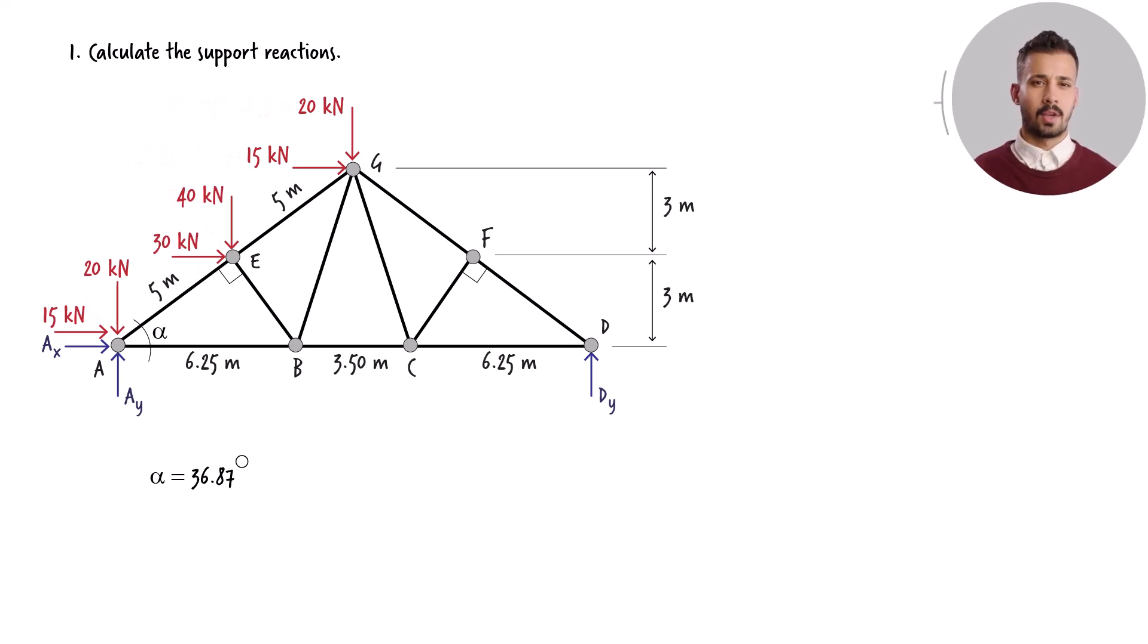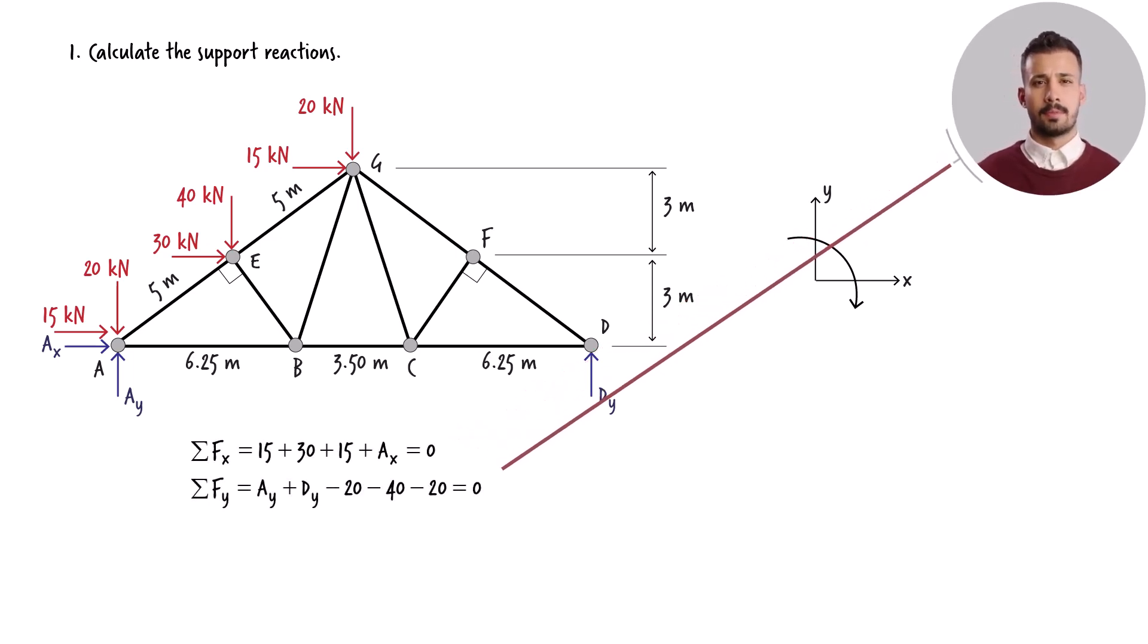We are now ready to write the equilibrium equations. Let's take these directions as positive. We need to write three equations: the sum of the forces in the x direction, the sum of the forces in the y direction, and the sum of the moments at point A are equal to zero.